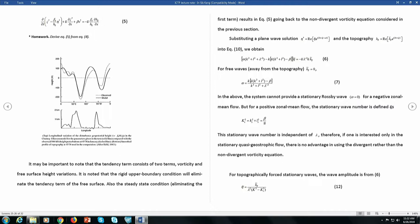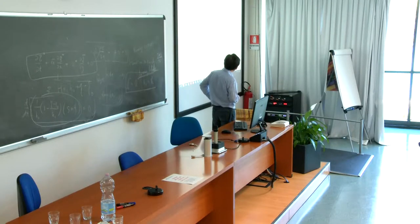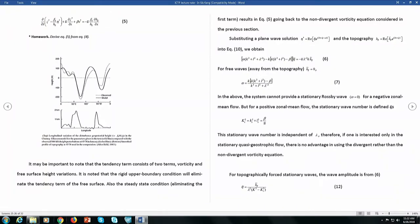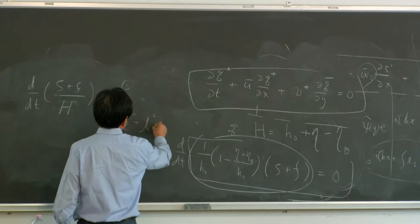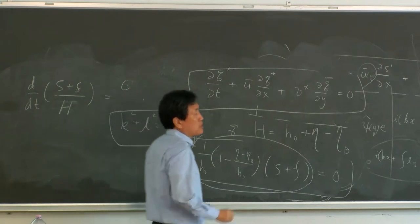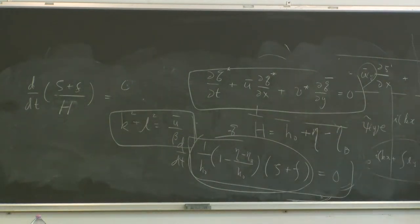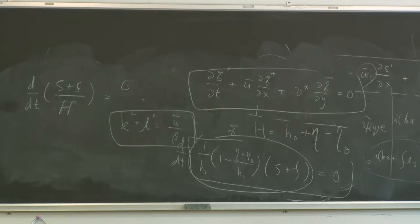When ω = 0, we have a stationary wave, so Ks² = k² + l² = β/ū. The stationary wave selection is the same as for the free wave. So k² + l² = β/ū_bar. The stationary wave selection is not influenced by the mountain itself. For negative zonal mean flow, ω cannot be zero, so a stationary wave can only exist for specific wave numbers. Stationary wave number selection is determined by the basic state — nothing to do with the mountain.